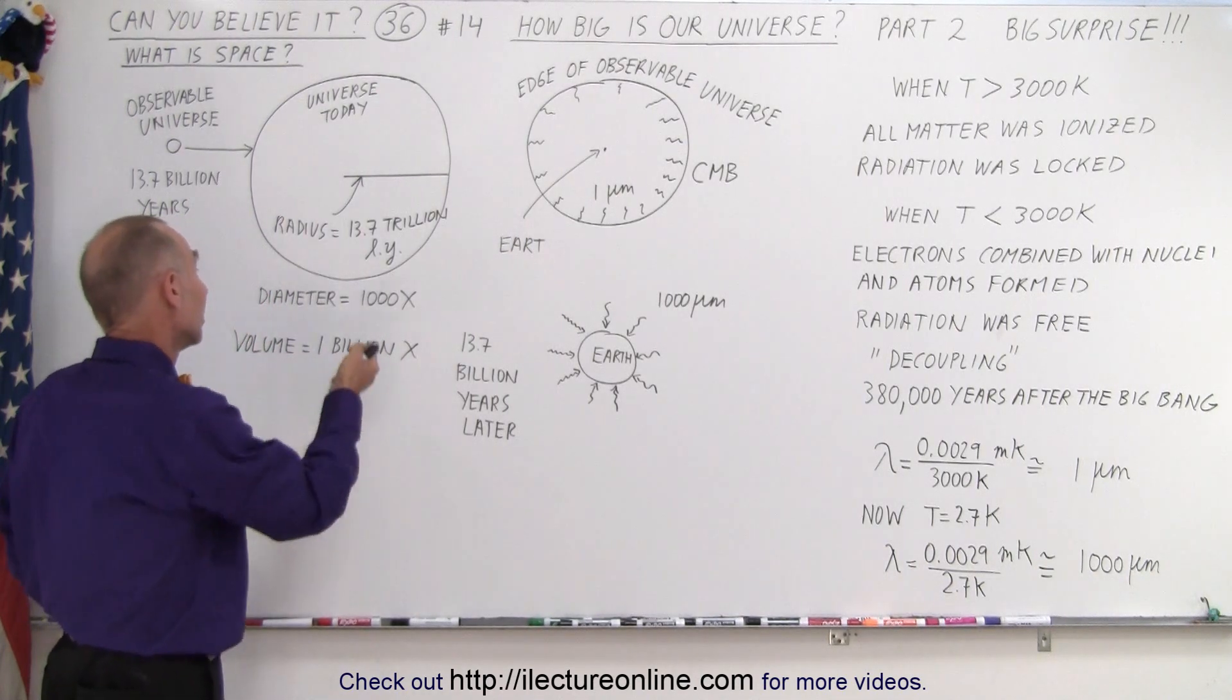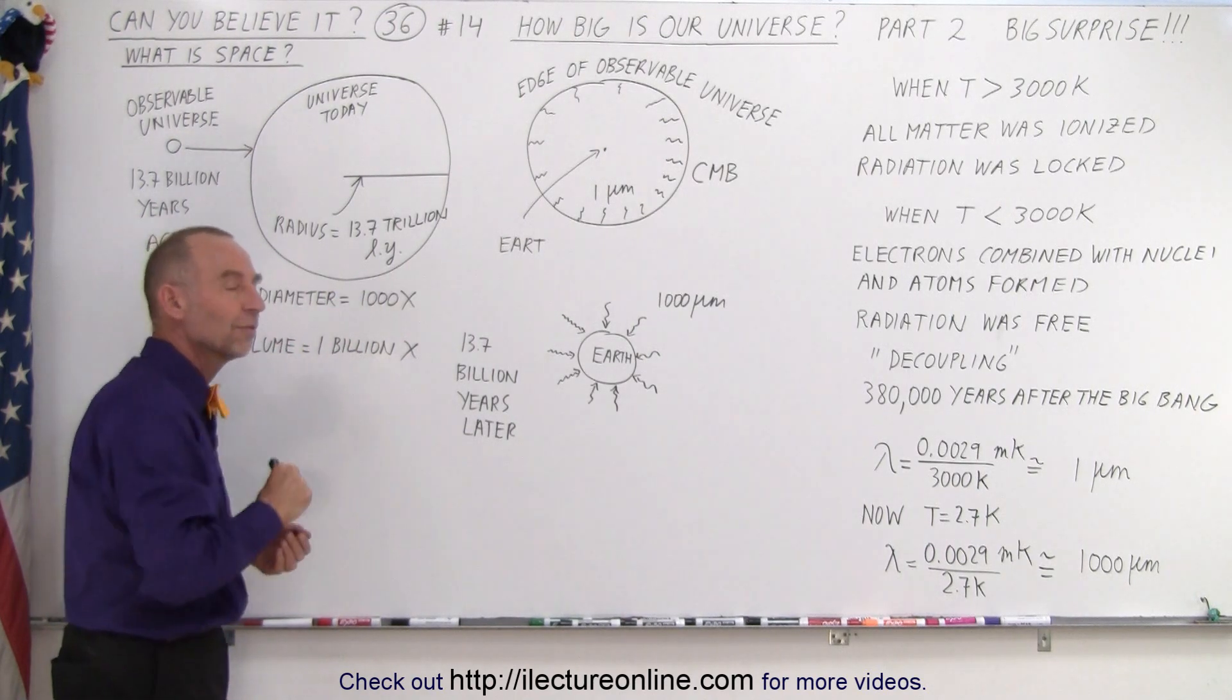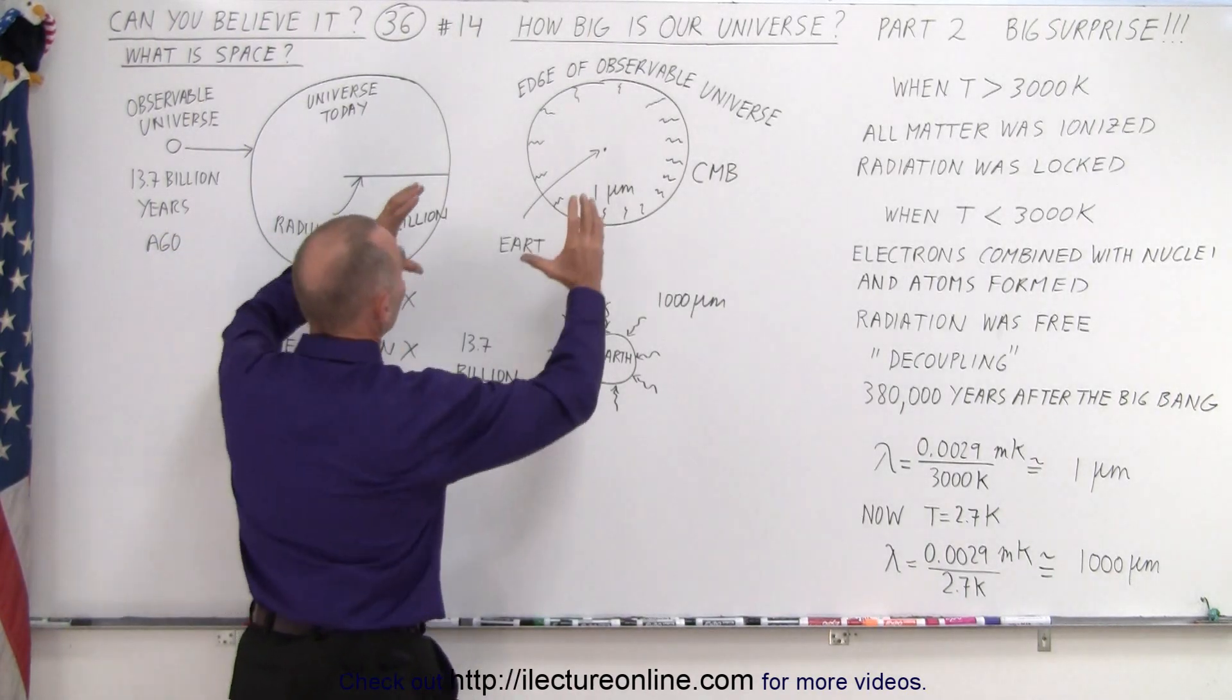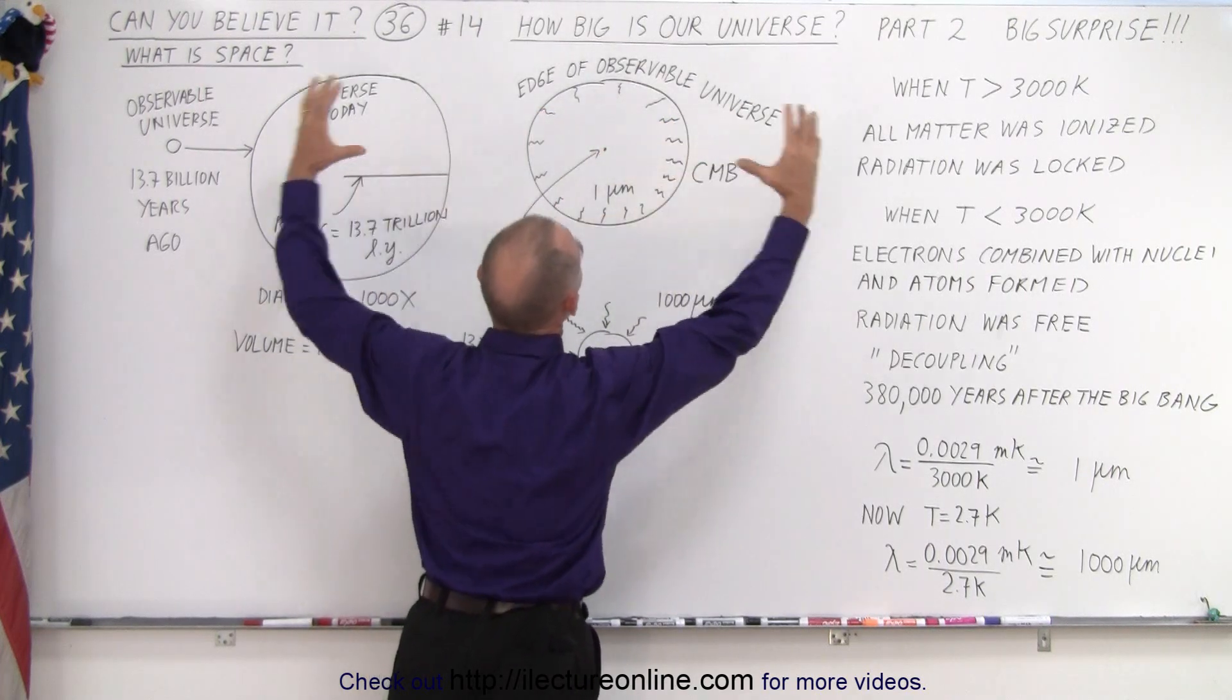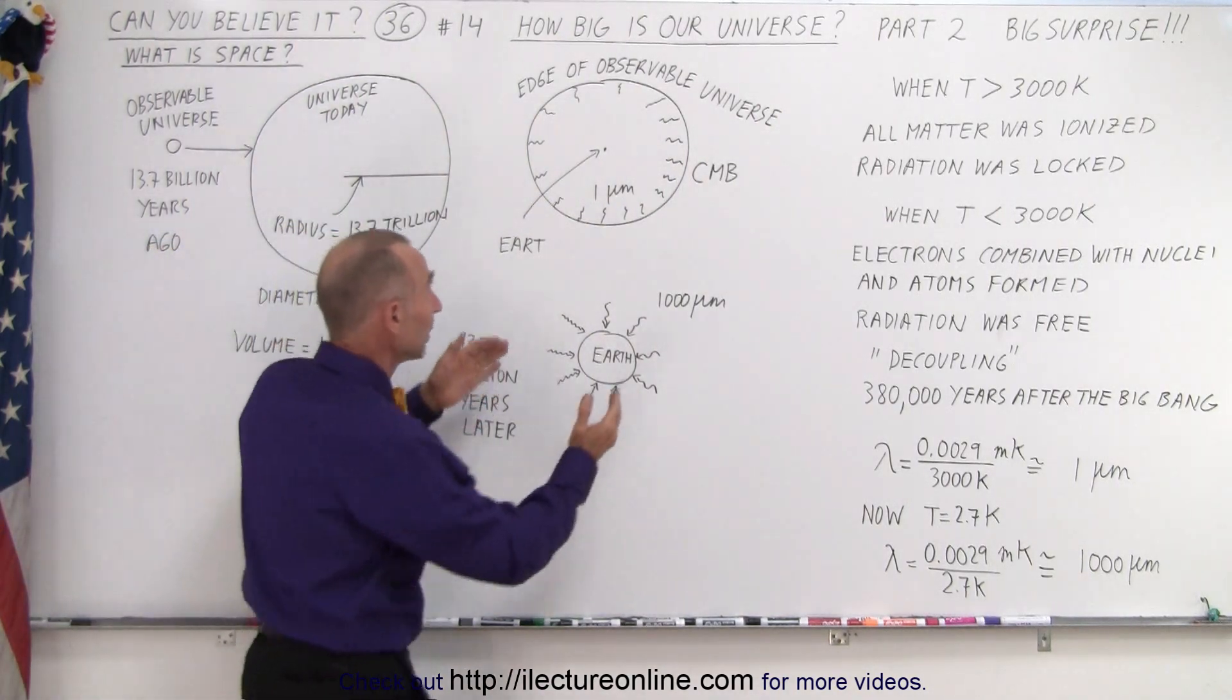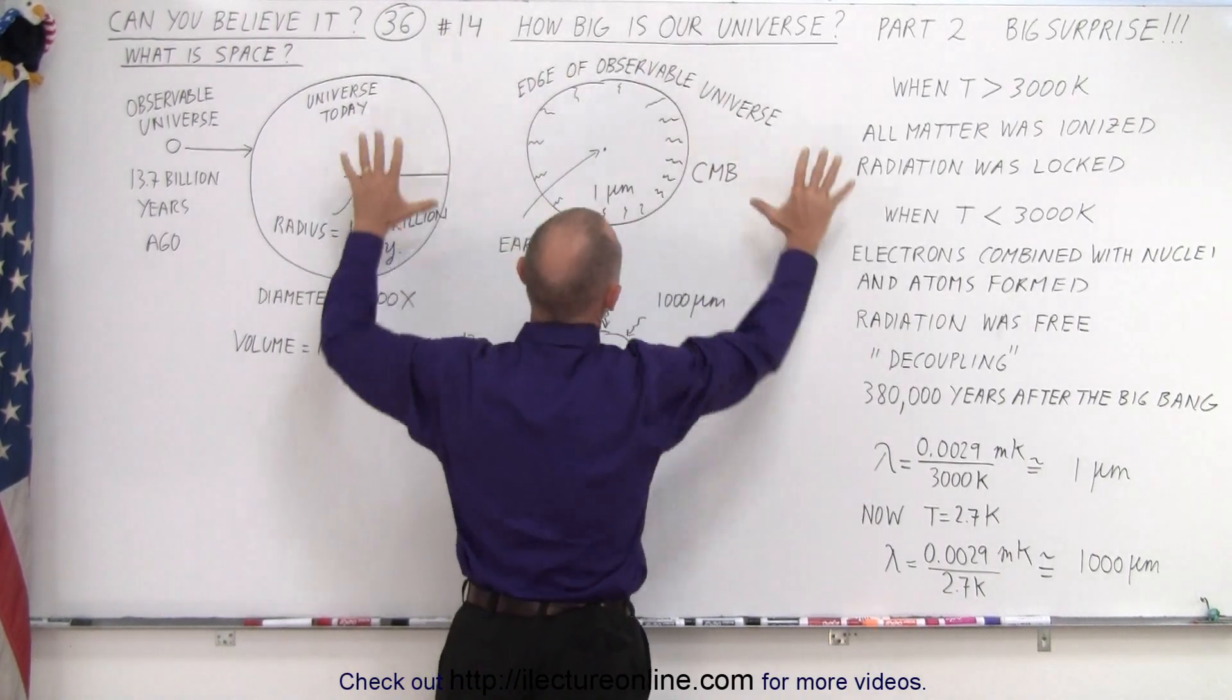Because essentially, we know the diameter must have increased a thousand-fold, which means that the volume must have increased a billion-fold. A thousand cubed is a billion. So whatever the size of the universe was 13.7 billion years ago, it has now grown to a billion times the volume, a thousand times the radius. At the very least, that's assuming that that was the absolute size of the universe back then.